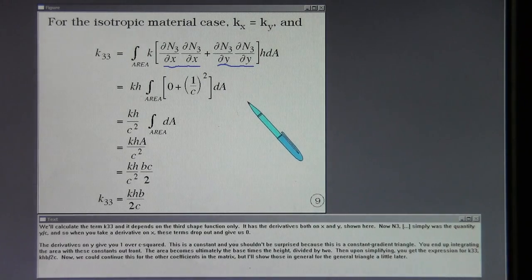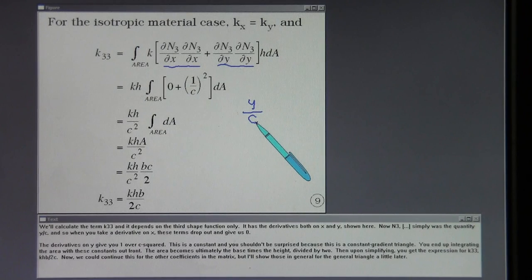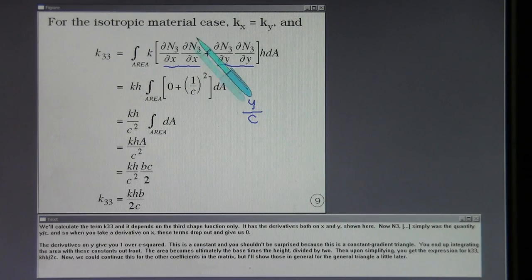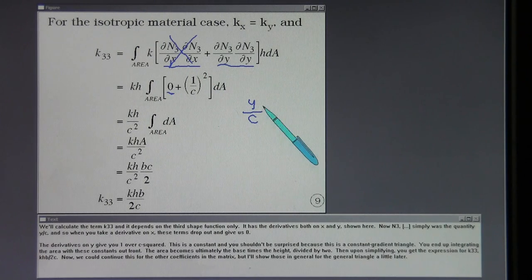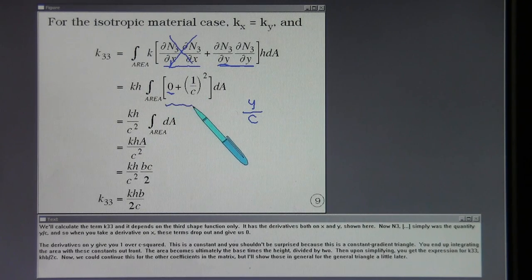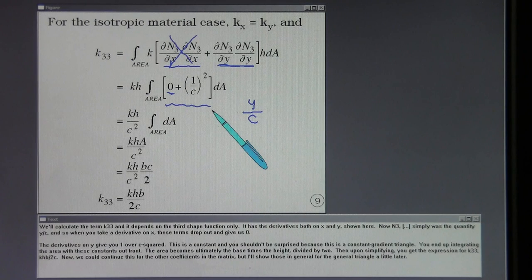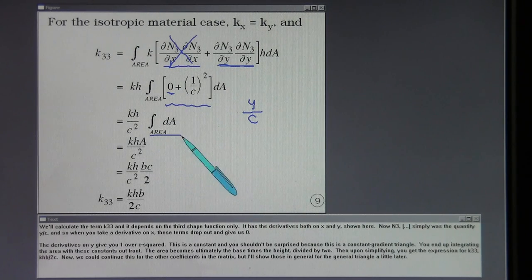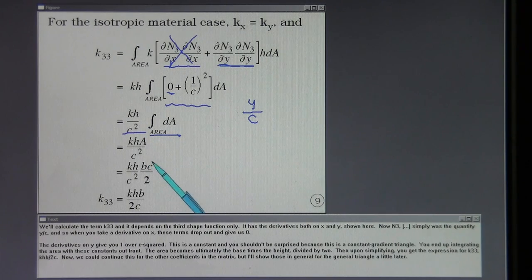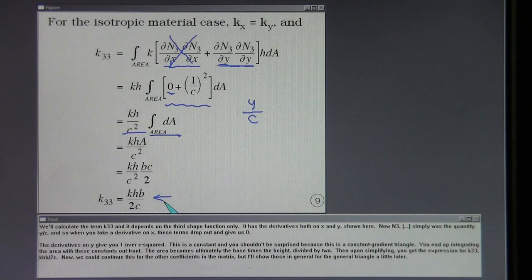It has the derivatives both on x and y shown here. N3, quite simply, was the quantity y over c. When you take a derivative on x, these terms drop out and give us 0. The derivatives on y give you 1 over c squared. This is a constant, and you shouldn't be surprised because this is a constant gradient triangle. You end up integrating the area with these constants out front. The area becomes the base times the height divided by 2. Upon simplifying, you get the expression for K33: K·H·b over 2c. We could continue this for the other coefficients in the matrix, but I'll show those for the general triangle a little later.